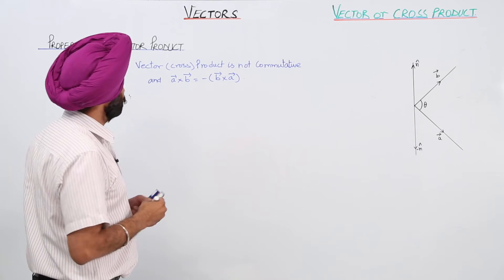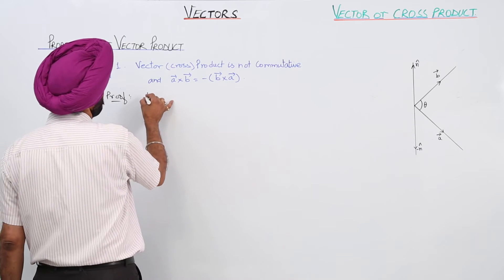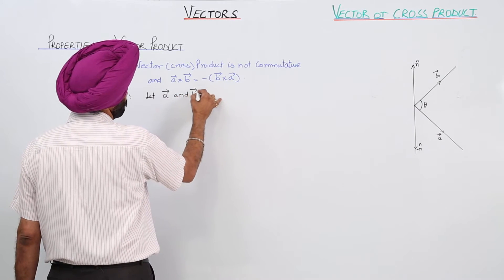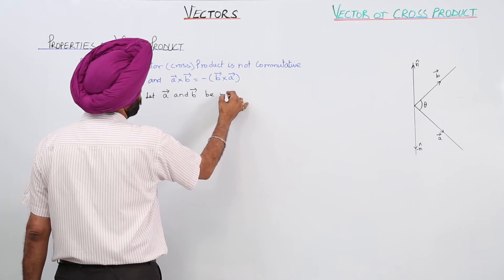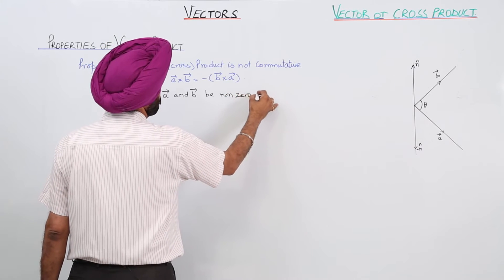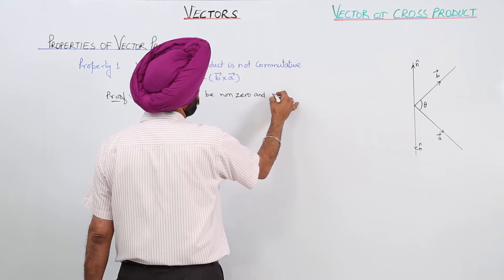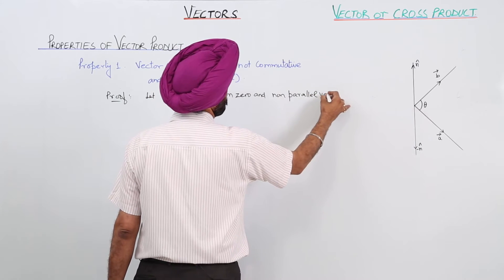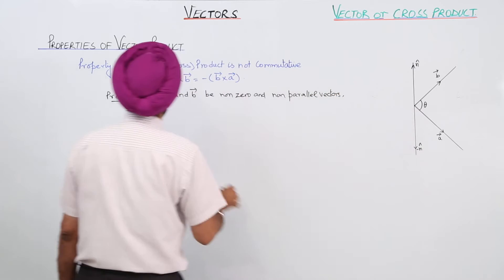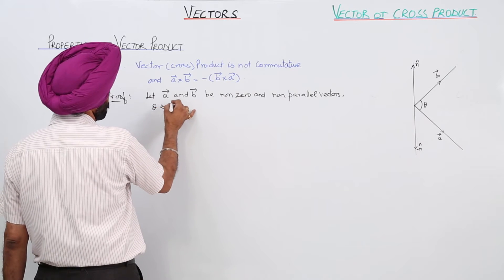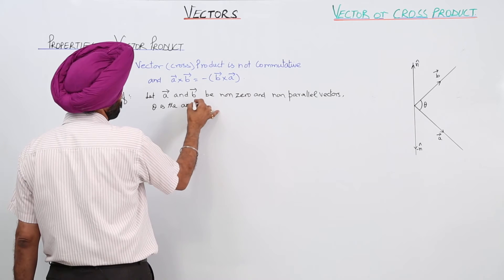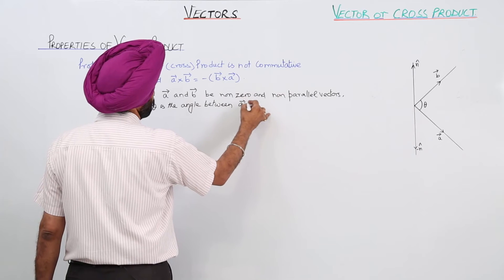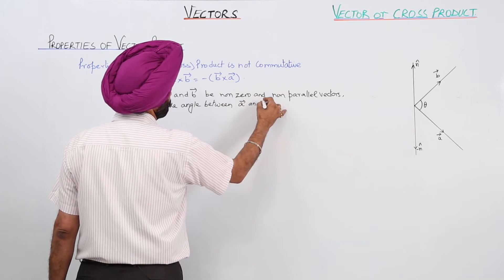So now let us prove it. I have drawn a diagram. Let vector A and vector B be nonzero and nonparallel vectors, and theta is the angle between vector A and vector B.